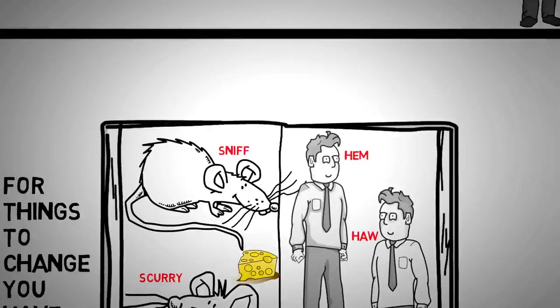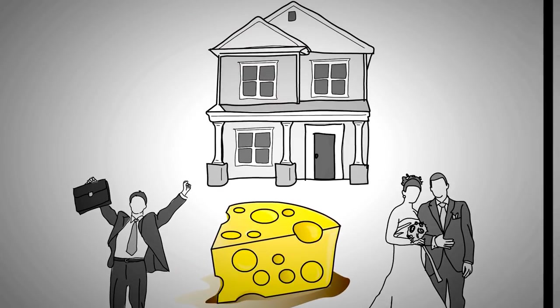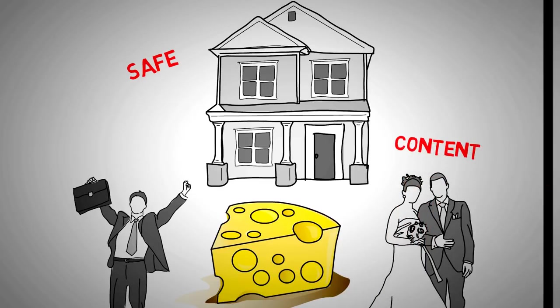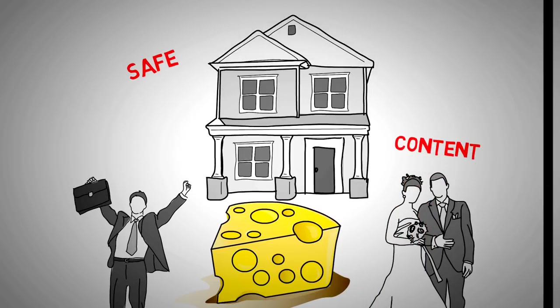Hem and Haw comfortably rely on their past knowledge and experience and assure themselves the cheese will be right where they left it. Hem and Haw even moved their house closer to their cheese and built a social life around it. They became so comfortable they didn't even notice what was happening.